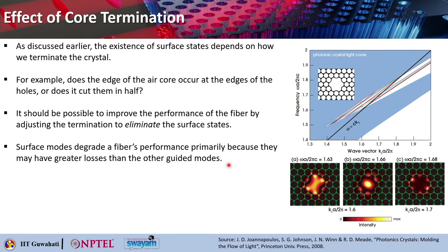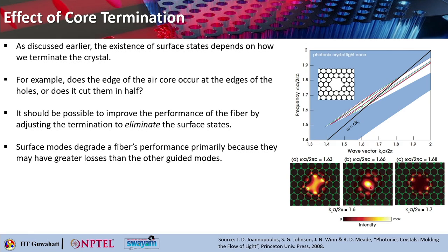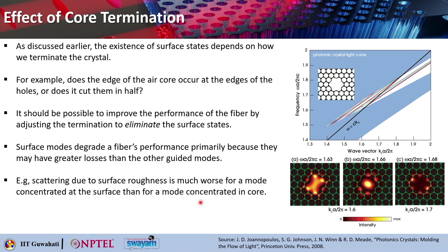Surface modes basically degrade a fiber's performance primarily because they may have greater loss than the other guided modes. Here you can see there are two possible air core modes that can be the guided modes. One example of why the guided surface modes would degrade the fiber's performance is mainly because of the scattering that comes from the surface roughness, which is much worse for a mode that is concentrated at the surface than a mode concentrated in the core.